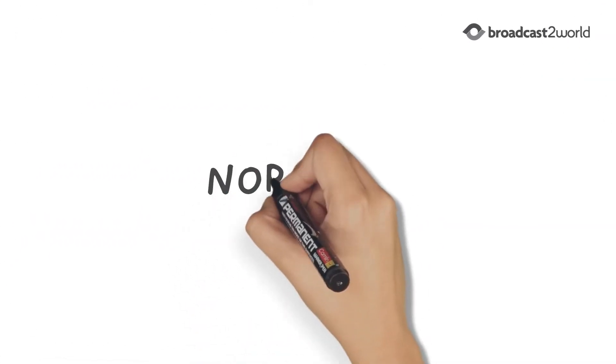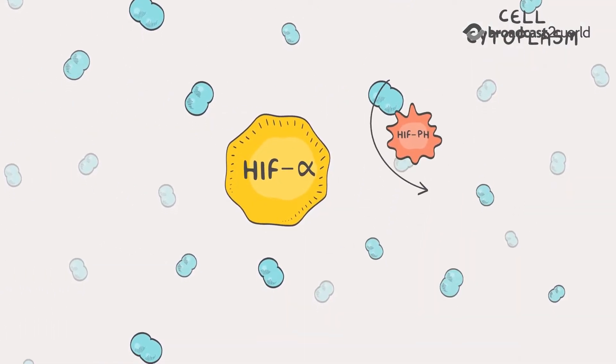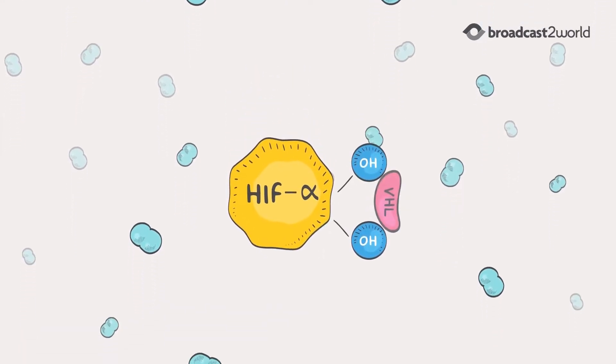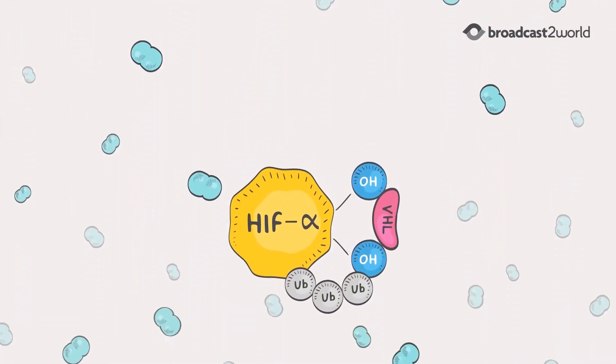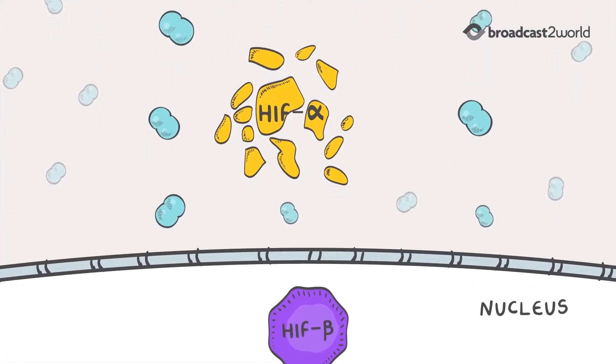Under normal oxygen conditions, or normoxia, prolyl hydroxylase enzymes, or HIF-PH enzymes, use oxygen to hydroxylate HIF-alpha. As a result, HIF-alpha rapidly degrades and is not available to dimerize with HIF-beta to form HIF.